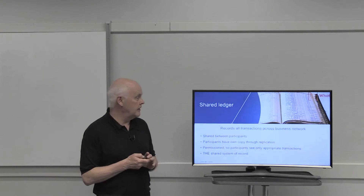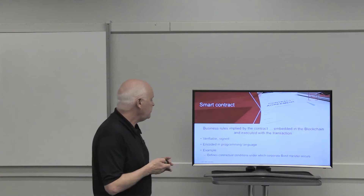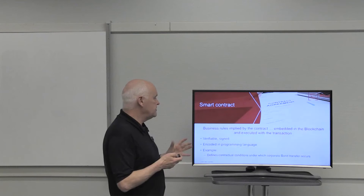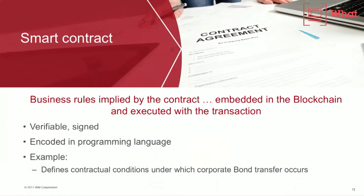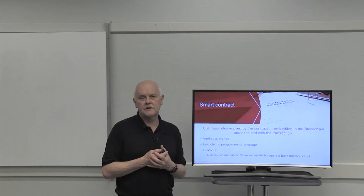Smart contracts are the way of encoding and sharing the shared business process around the business network. The contracts themselves are produced by taking the English contract and encoding that in computer-readable language, and the contracts will also be verified and signed when they're distributed across the business network. This aspect really takes some organizations a little while to realize once we start talking to them about it.